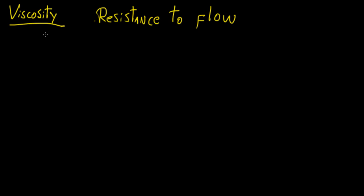The more viscous a fluid is, the more resistance it is going to put against flow, and the harder it is for it to actually travel or be transported from one place to another. A very good example of a viscous fluid is honey. You can imagine trying to take it out of a jar — it's going to seep through very slowly. That's mainly because the high viscosity means there's a lot of tension at the surface, a lot of forces acting on it, so the displacement between the molecules is going to be very slow.